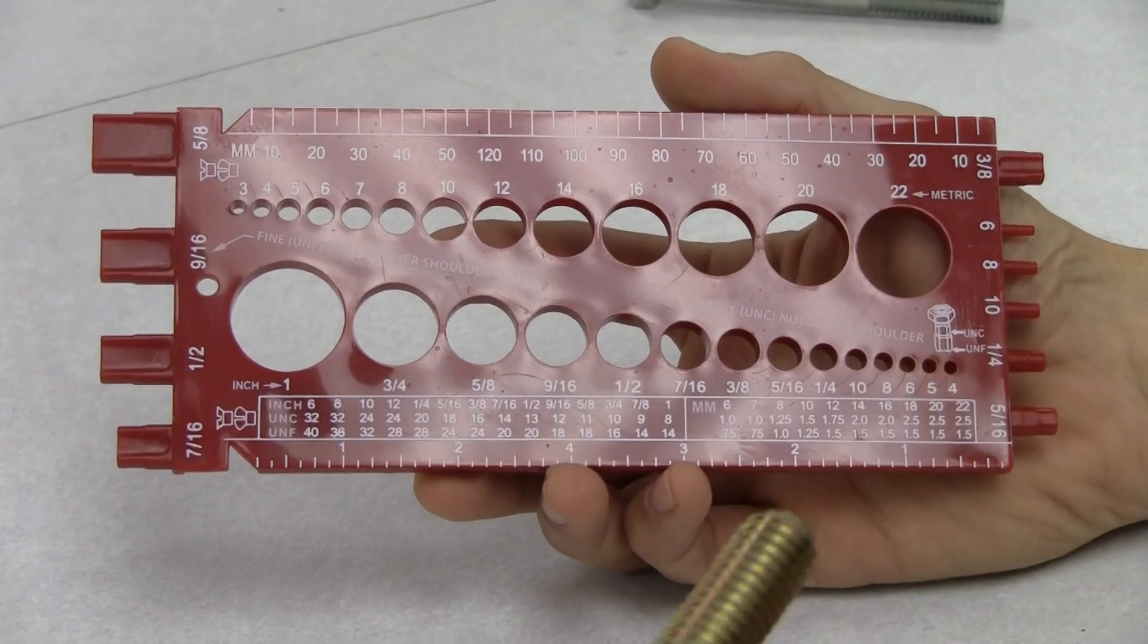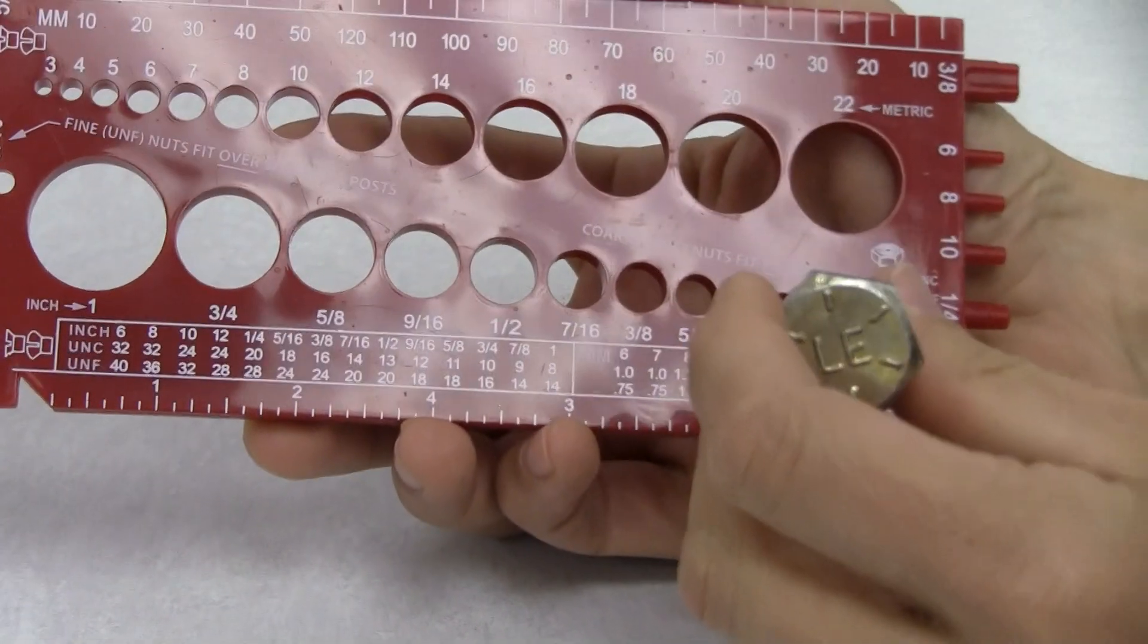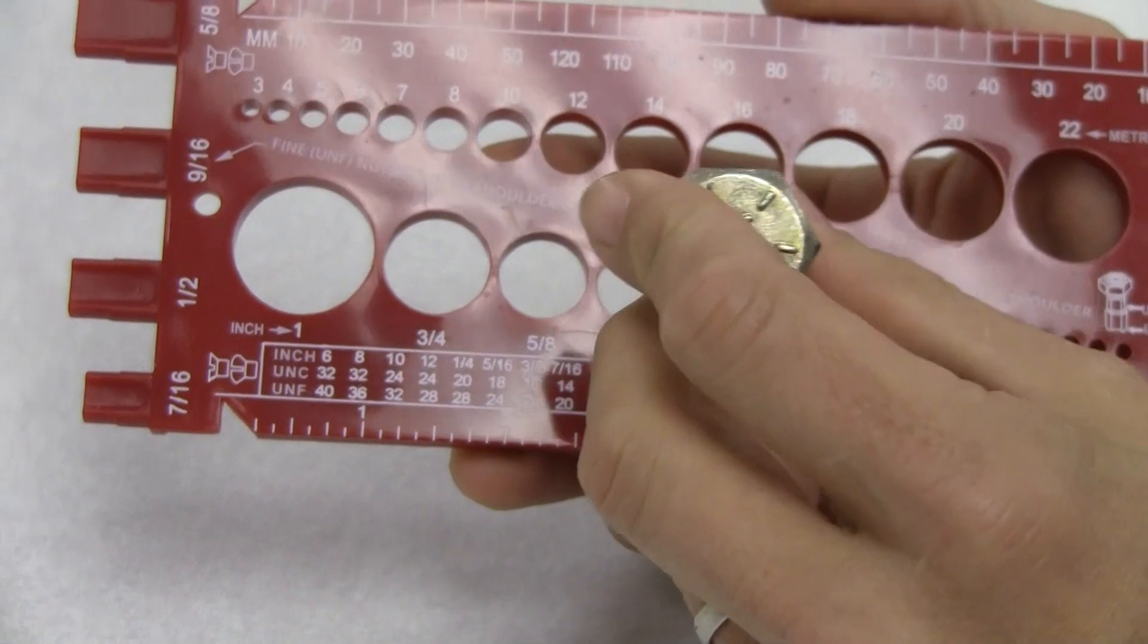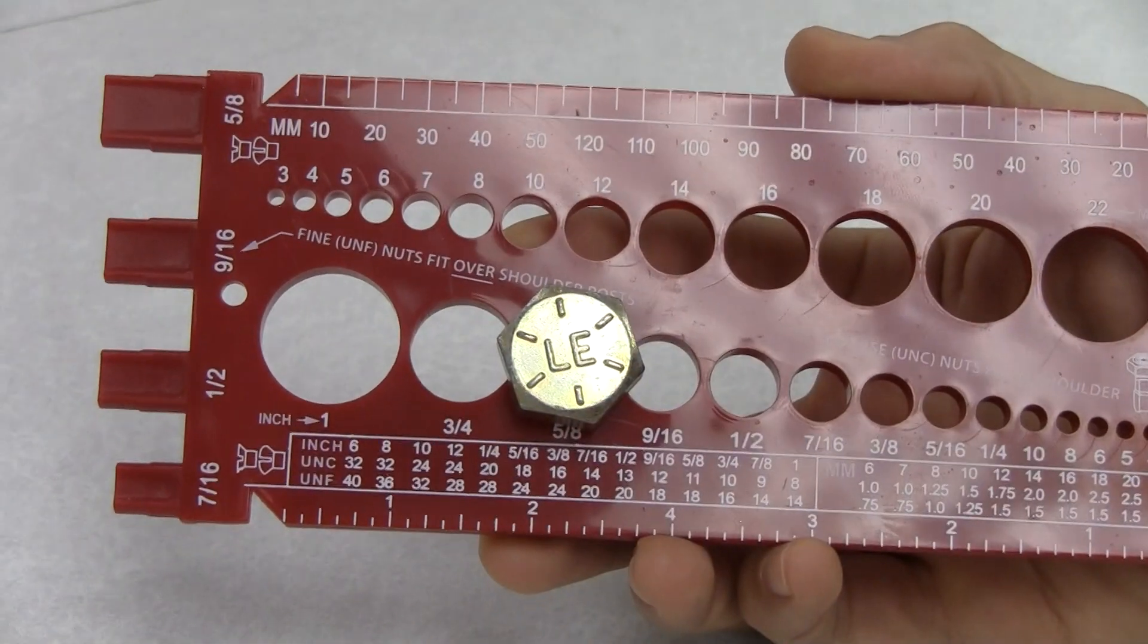In order to check the diameter, we will take our cap screw, put it on the gauge going from the smallest hole to the largest hole until it drops into one of the holes.